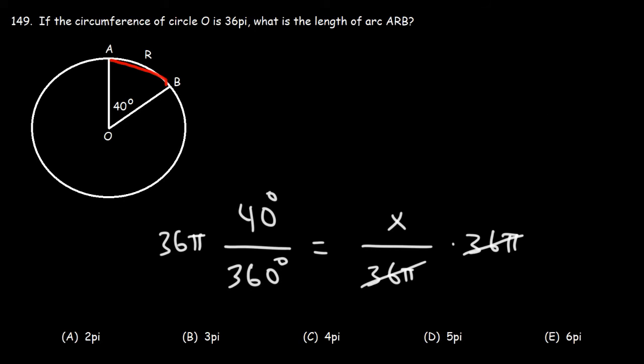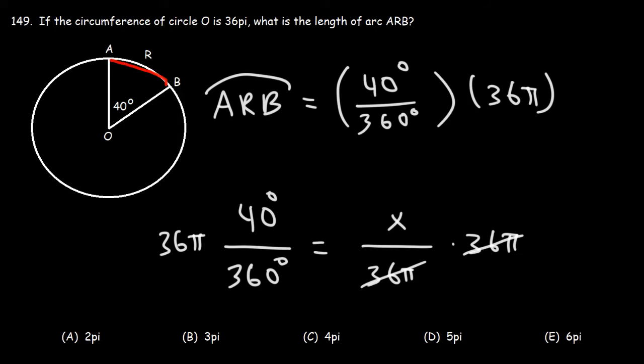In order to get x by itself, we're going to multiply both sides by 36 pi. And so the arc length, or the length of arc ARB rather, is going to be 40 degrees over 360 times the circumference itself, which is 36 pi.